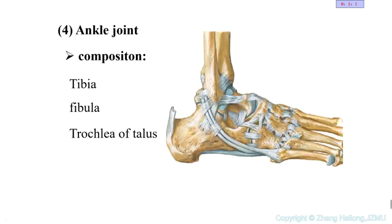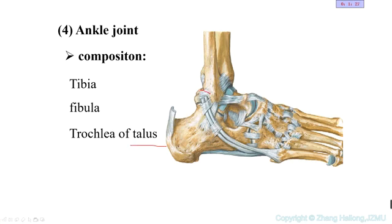Now it's about the ankle joints. The ankle joint is formed by the lower part of the tibia and fibula, and the top of the bone of the foot. The top bone of the foot is the talus. On the superior surface, the talus has a trochlear surface. The trochlear surface connects with the lower portion of the tibia and fibula. These two surfaces form the ankle joint.